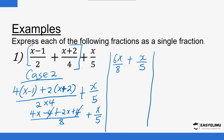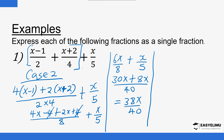You can simplify further, or just cross multiply again since there are two terms: 5 × 6x = 30x and 8 × x = 8x, giving 38x on top; and 5 × 8 = 40 on the bottom. So 38x over 40 equals 19x over 20 — the same answer we got in Case One. Either approach leads to the same final answer.